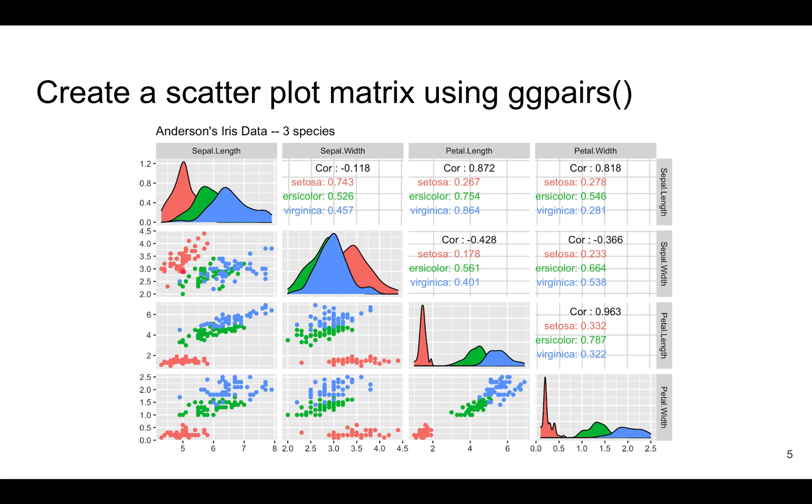You also see the scatter plots, which are all possible pairs of different variables. Sepal length and sepal width is this one, for example. And we also have the correlations between different variables. For example, the correlation between sepal length and sepal width is about minus 0.1.